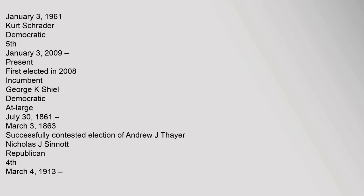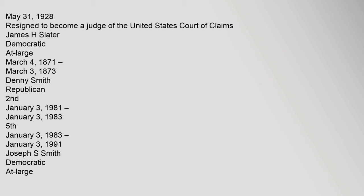George K. Scheele, Democratic, at large, July 30, 1861 to March 3, 1863, successfully contested election of Andrew J. Thayer. Nicholas J. Sinnott, Republican, 4th, March 4, 1913 to May 31, 1928, resigned to become a judge of the United States Court of Claims. James H. Slater, Democratic, at large, March 4, 1871 to March 3, 1873. Denny Smith, Republican, 2nd, January 3, 1981 to January 3, 1983; 5th, January 3, 1983 to January 3, 1991.